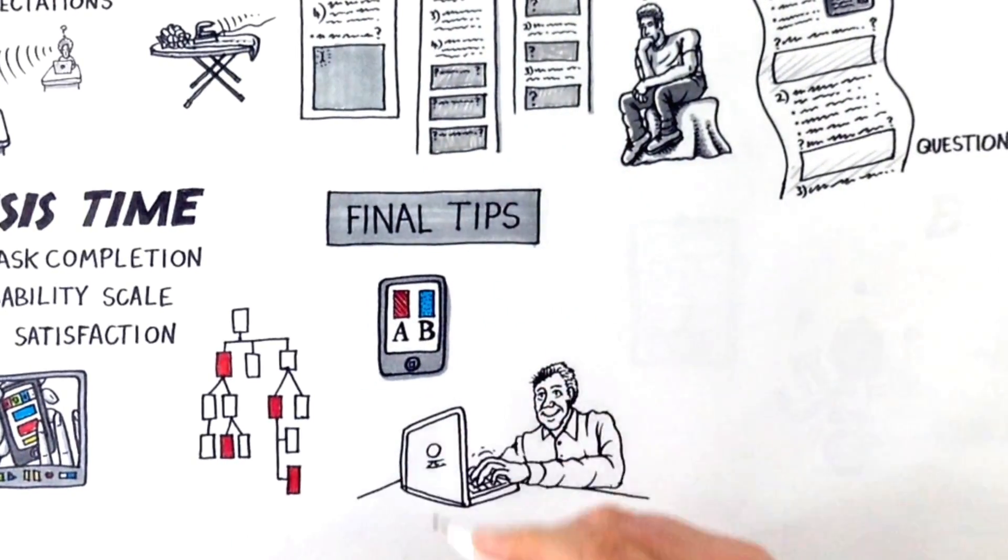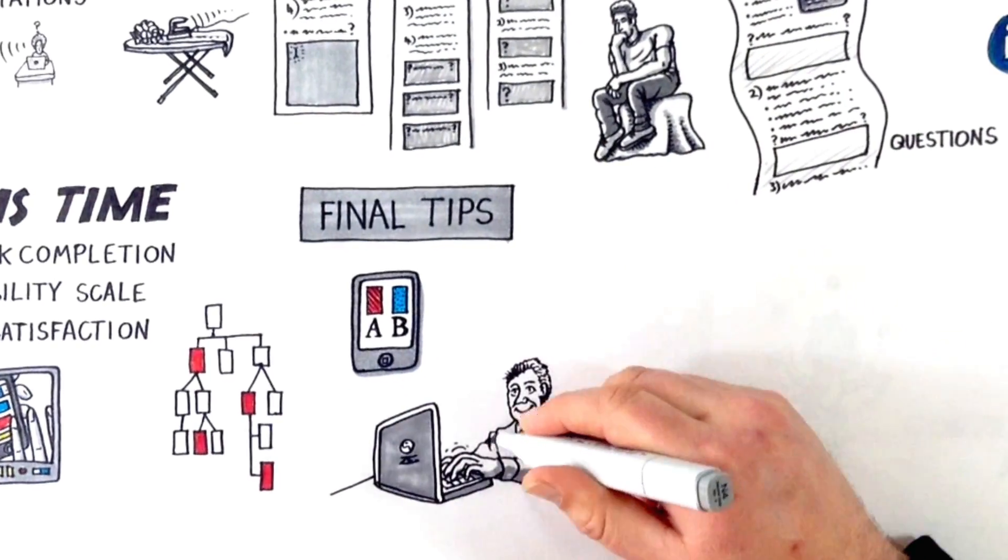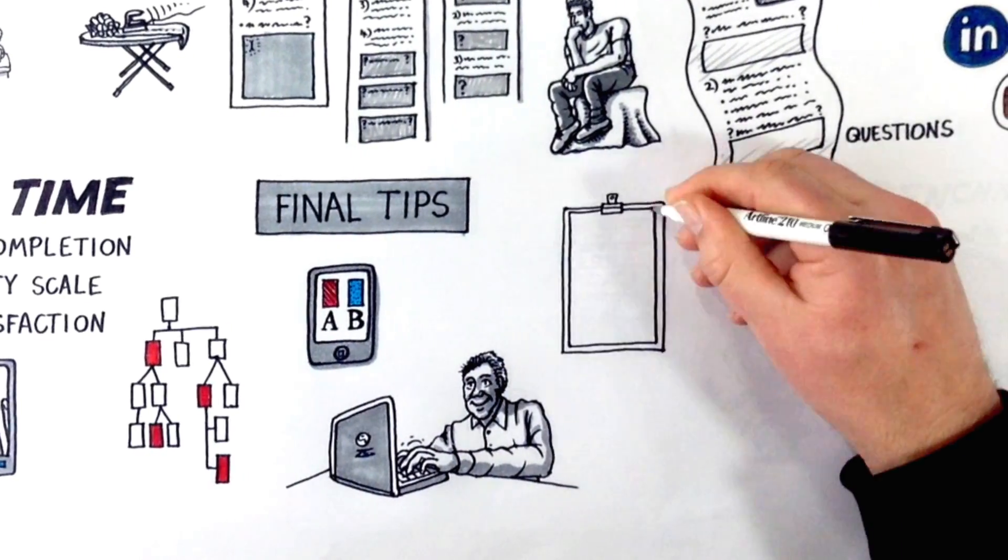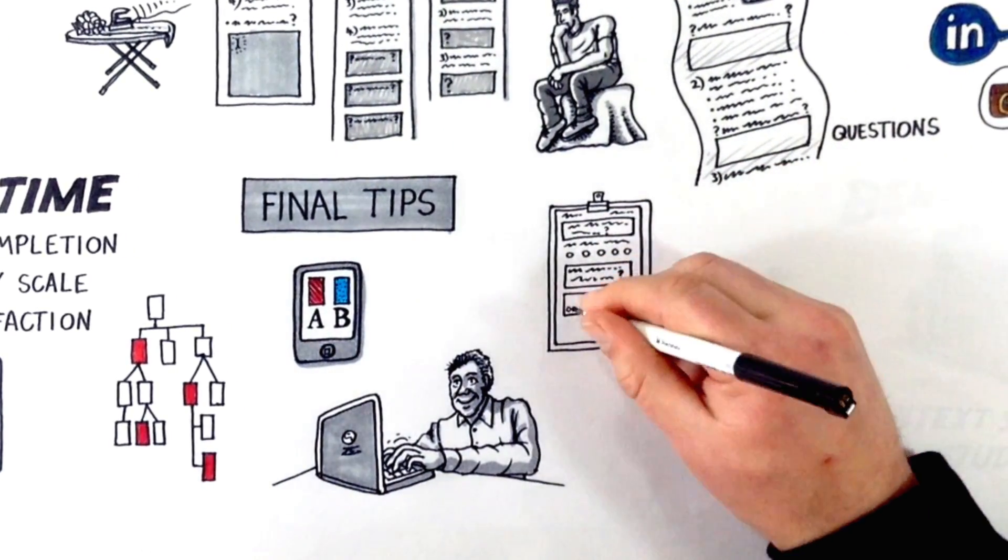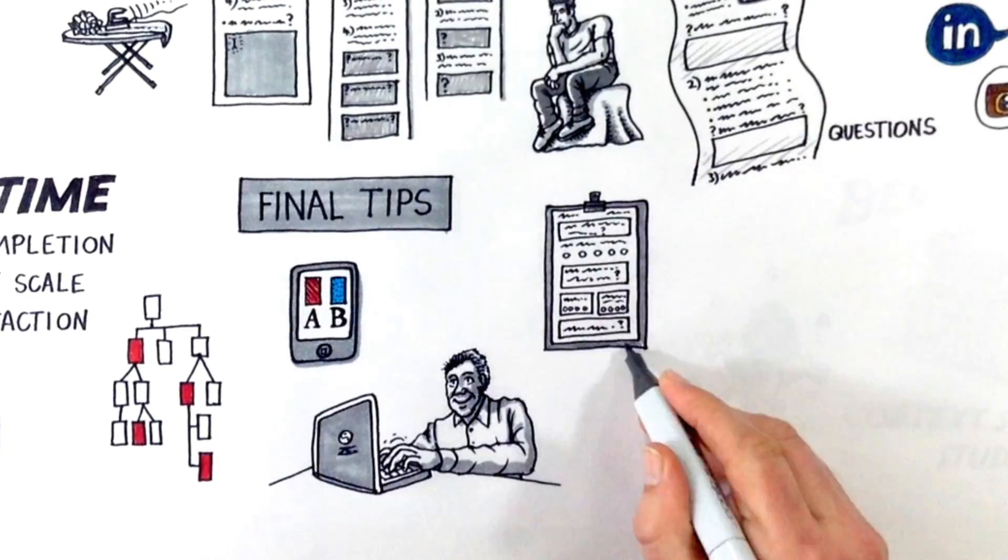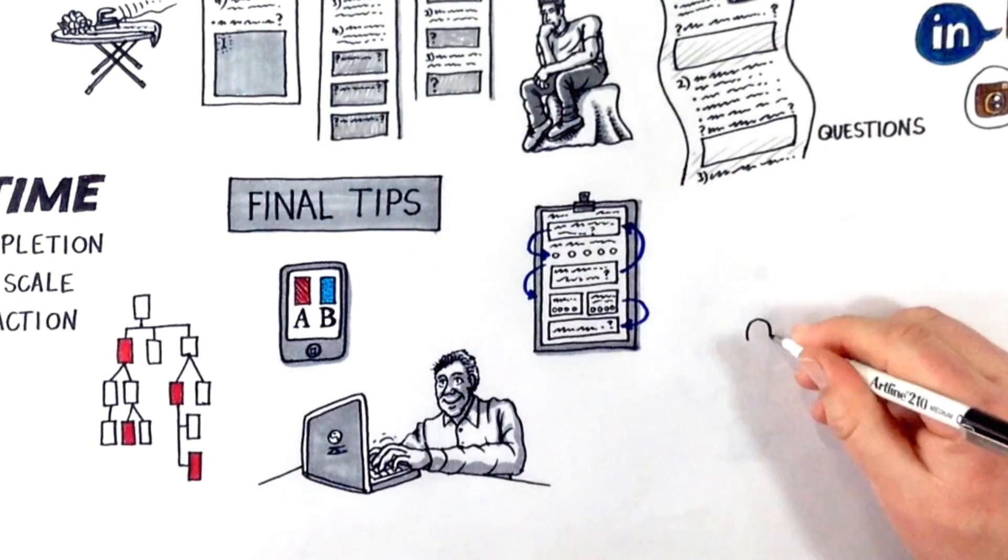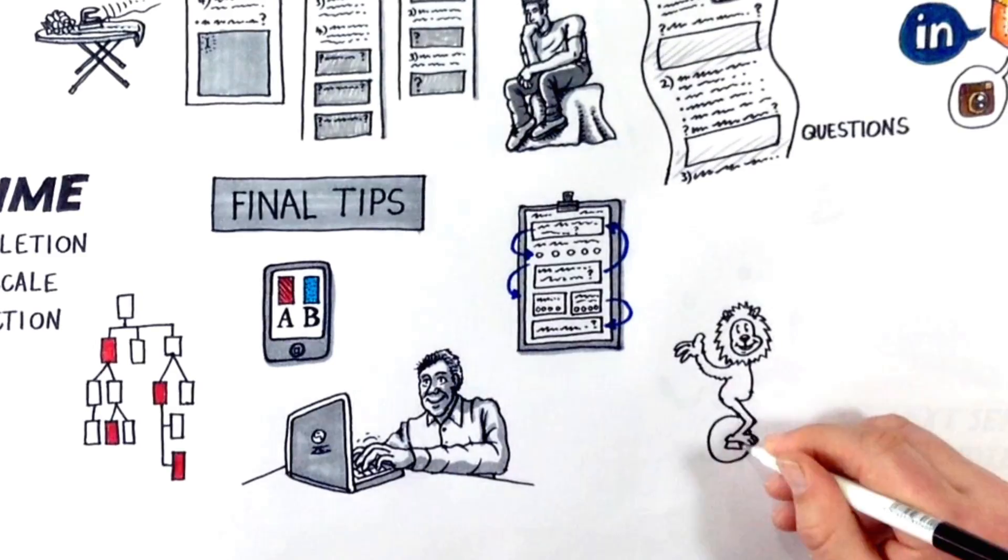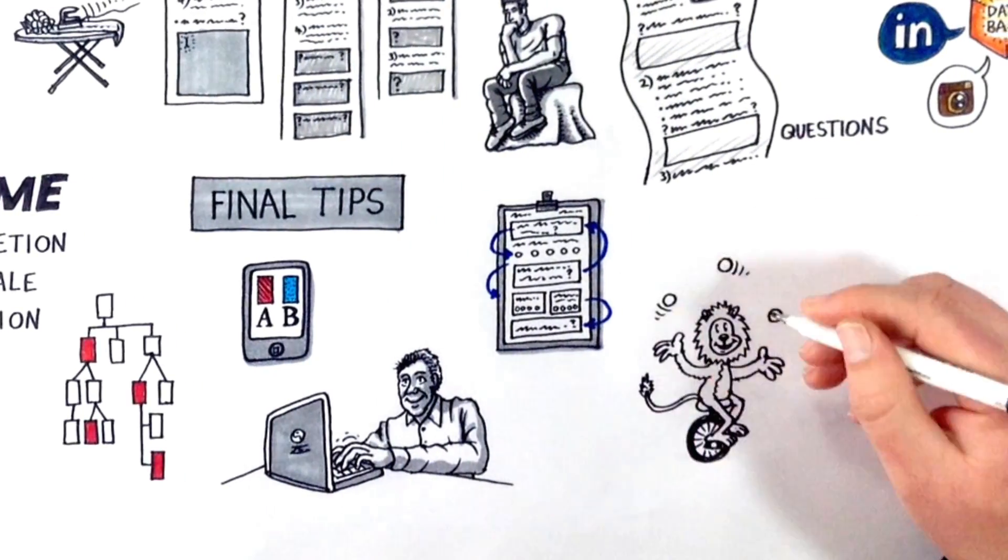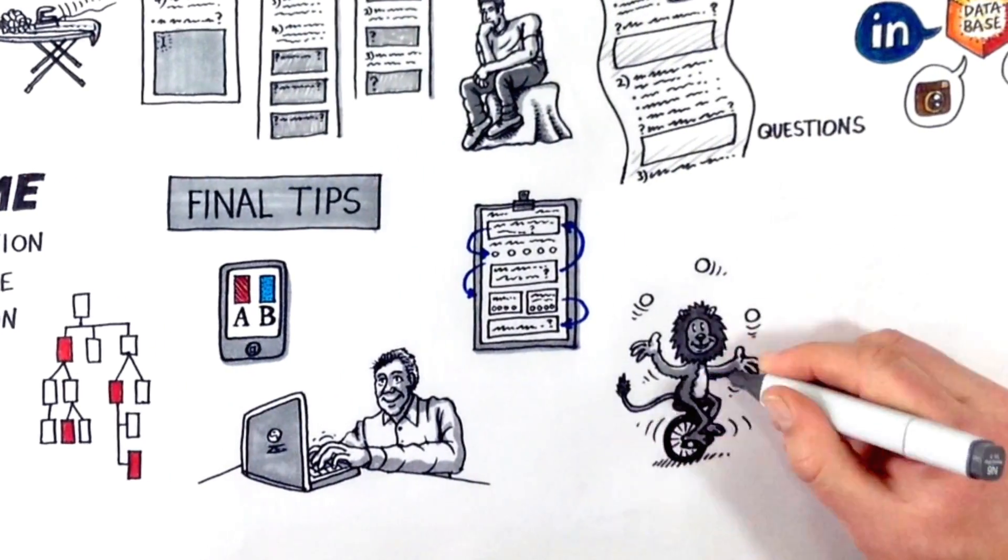It is crucial to ensure that tasks are clear, user-friendly and that help is available. Avoid bias. Randomize the order of tasks and pay attention to task wording to avoid bias. Keep participants engaged. Avoid participants quitting your study by keeping it interesting and short.